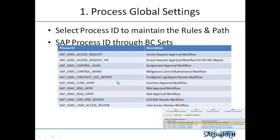This depends on your organizational scenario — whether you perform function changes and risk changes in your productive system and want an additional approver for those specific function or risk changes. Next is GRAC Role Approver, used in business role management. Whenever you change any roles, a role owner will approve those changes. All related processes and workflows are defined in this process ID. The SoD Risk Review workflow is used to review SoD conflicts during the review process — all those workflows are configured under this process ID.